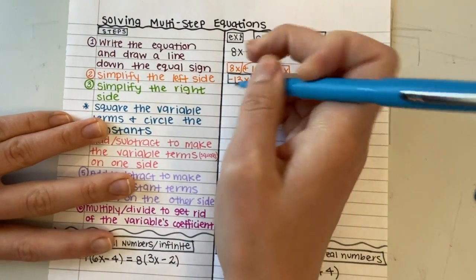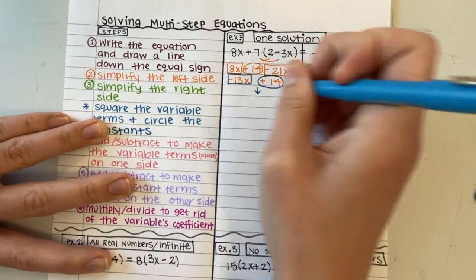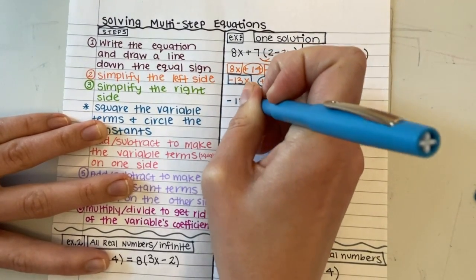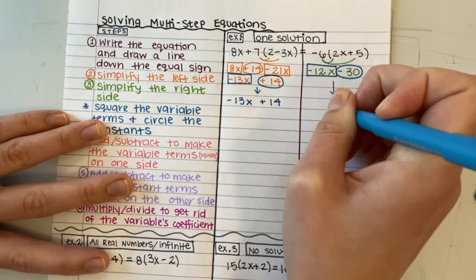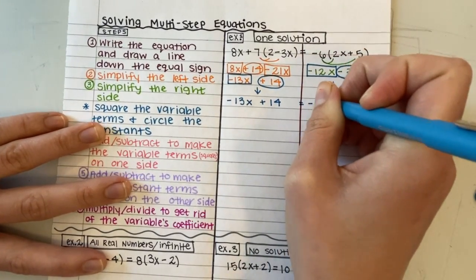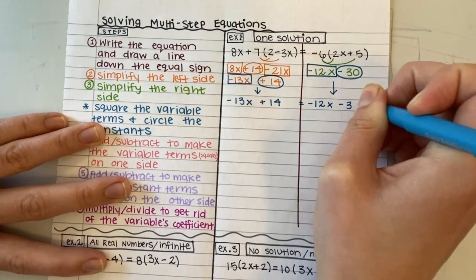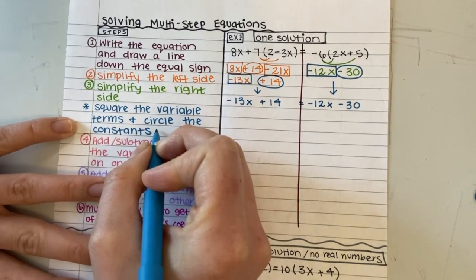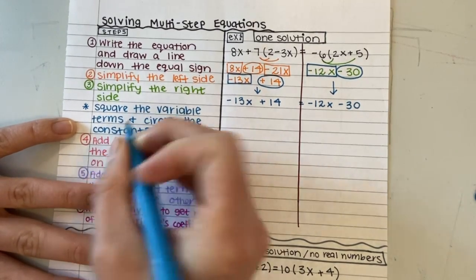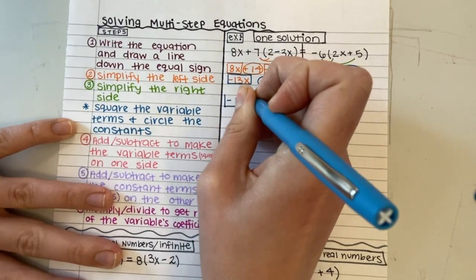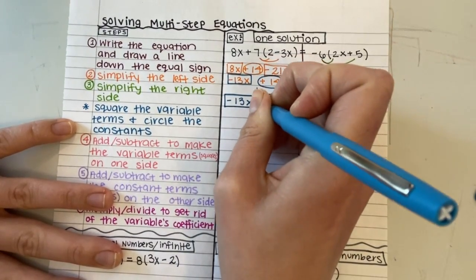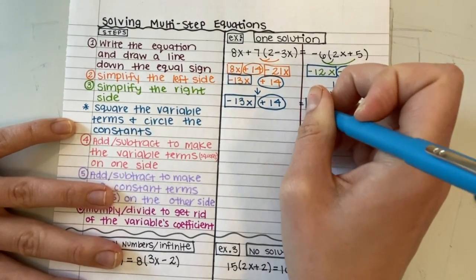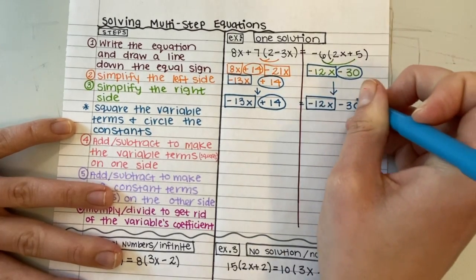What I'm going to do is make sure my two sides are in line with each other. Negative 13x plus 14 equals negative 12x minus 30. And what I'm going to do is square my variable terms and circle the constants. So we're going square, circle. Notice you include the sign that comes before it. Square and circle.